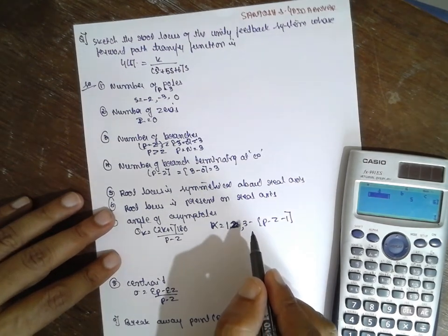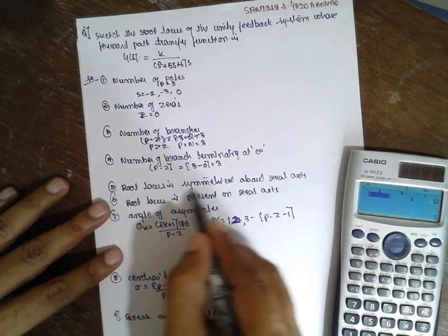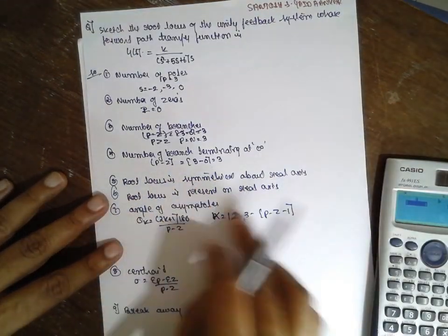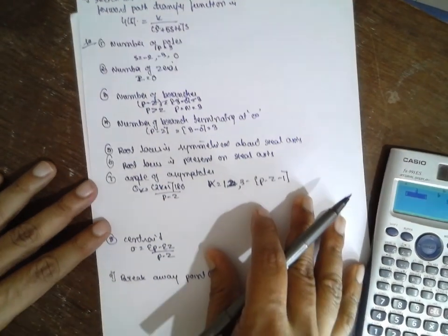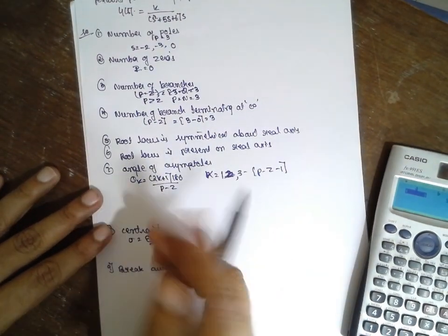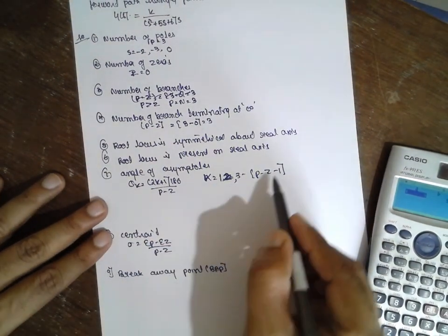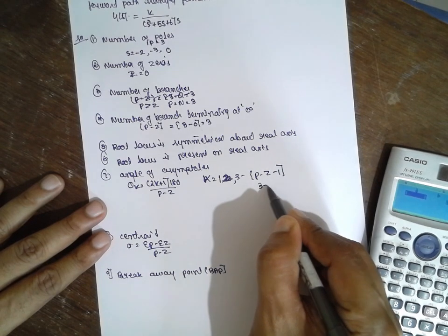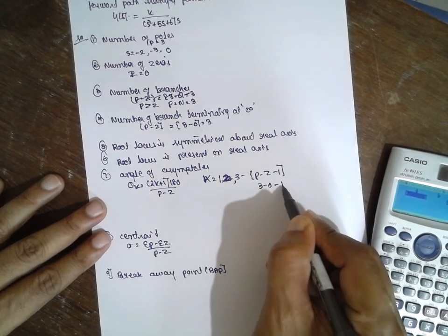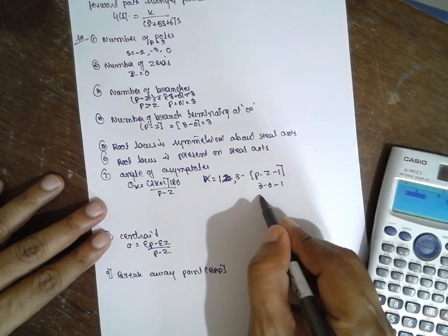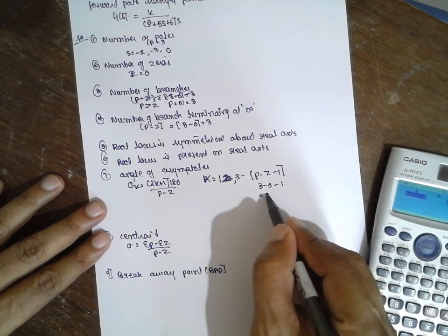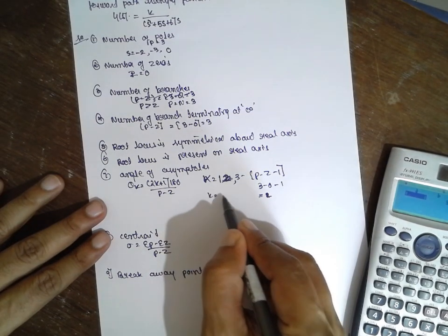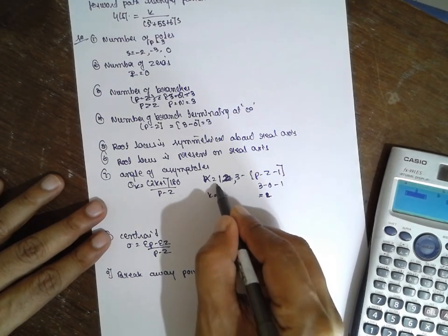Root locus is symmetric about the real axis and root locus is present on the real axis. This is the angle of asymptote formula. P equals 3, Z equals 0, so P minus Z equals 3. K should take values 0, 1, and 2.